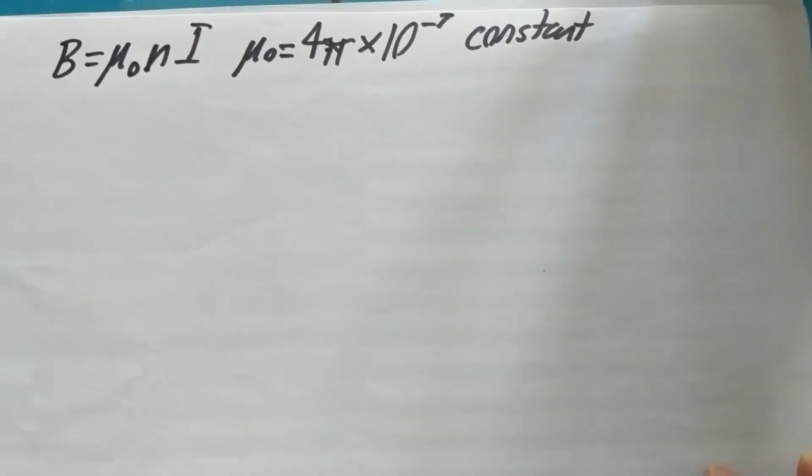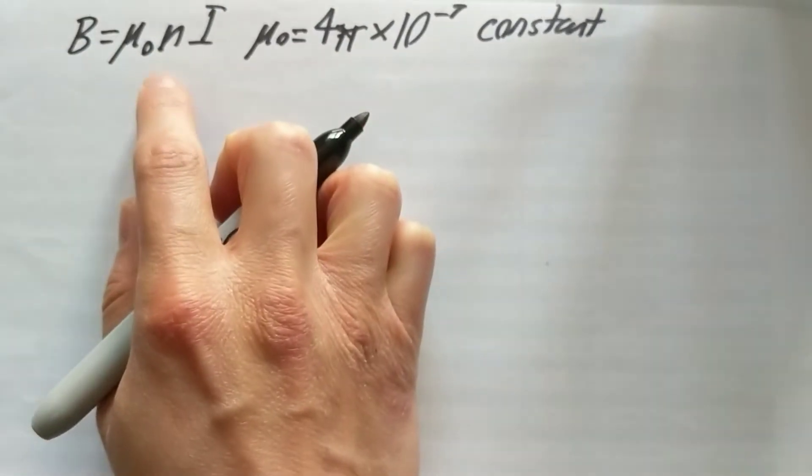Alright, so in this problem we're trying to calculate the magnetic field around a solenoid, and you notice it's dependent here on this equation.